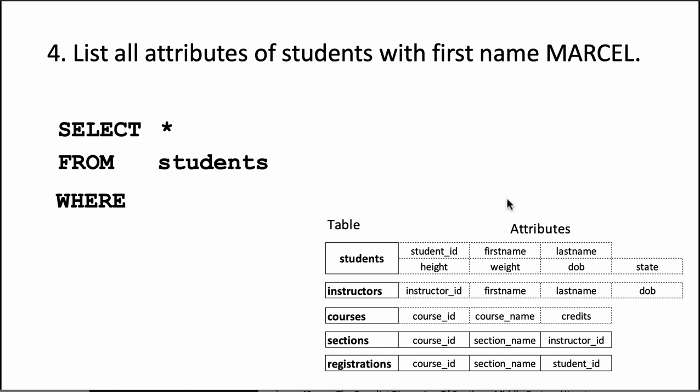So this time we want the first name of the student to be Marcel. So we just state that. We say where first name equals Marcel. So whenever the first name is Marcel, keep it. If it's not Marcel, drop it. Meaning don't include it in the results. As simple as that.